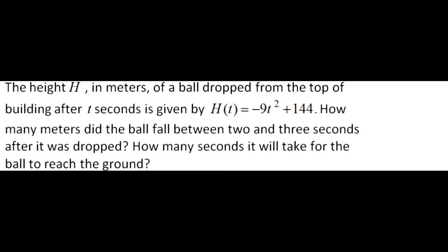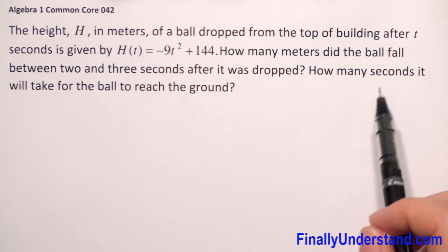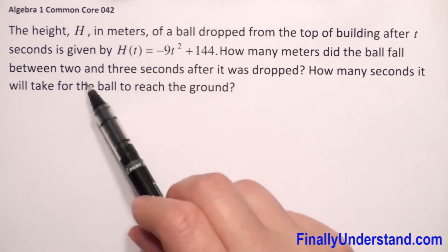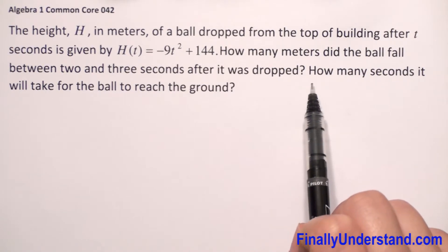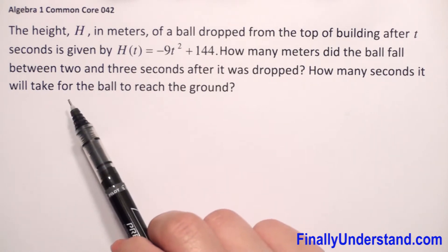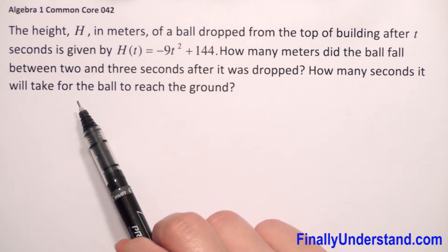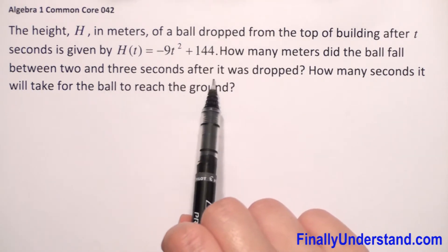The height in meters of a ball dropped from the top of a building after t seconds is given by h(t) = -9t² + 144. How many meters did the ball fall between 2 and 3 seconds after it was dropped? The second question is how many seconds will it take for the ball to reach the ground.